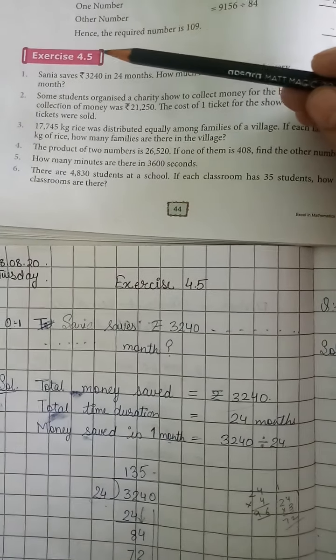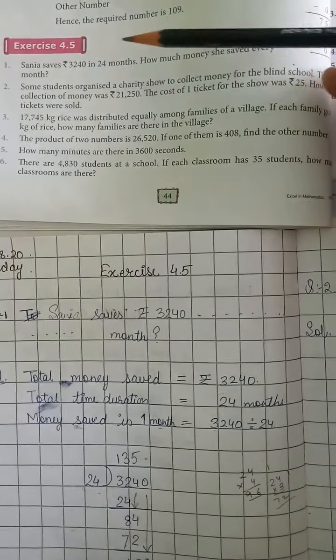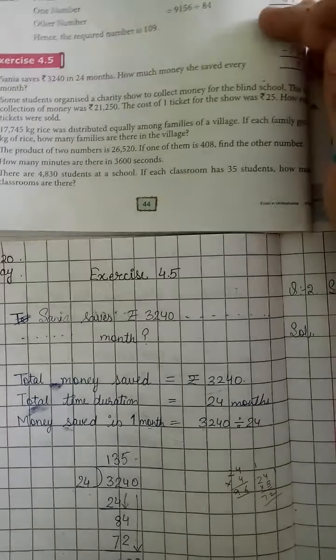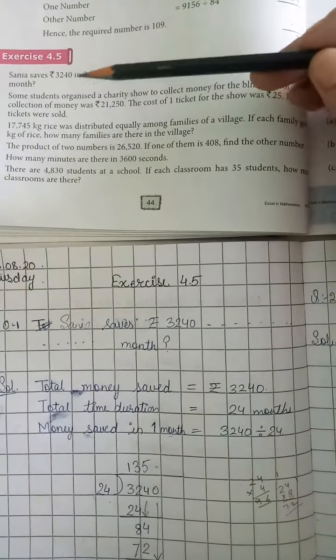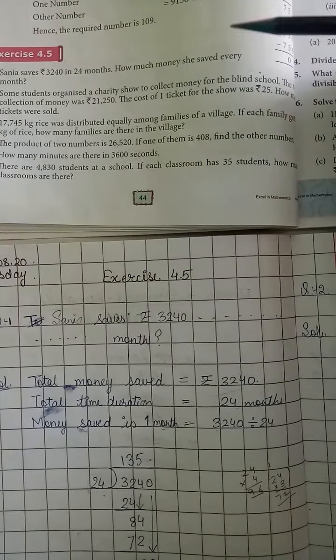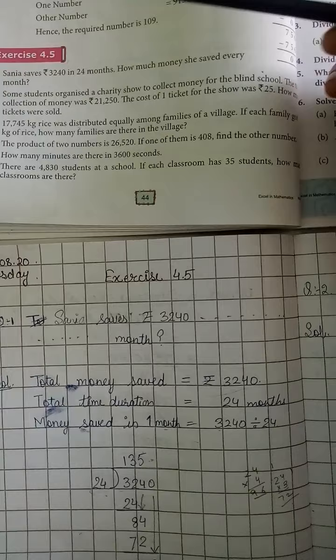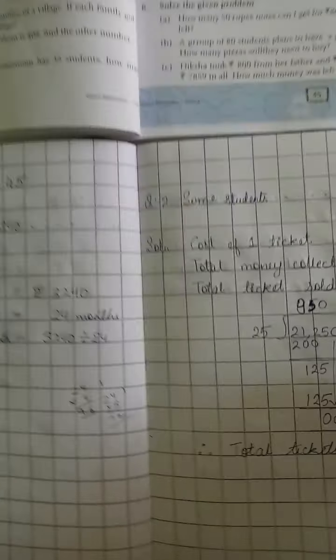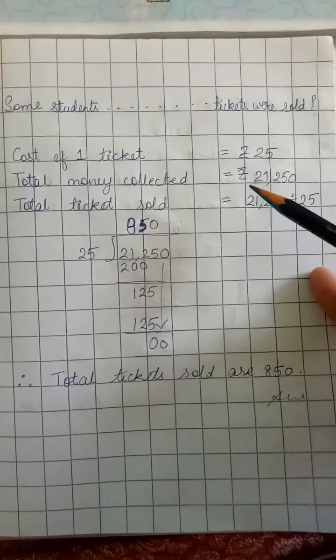Good morning dear students, we are doing exercise 4.5 question number 2. Some students organized a charity show to collect money for the blind school. The total collection of money was 21,250 rupees. The cost of one ticket for the show is 25 rupees. How many tickets were sold?